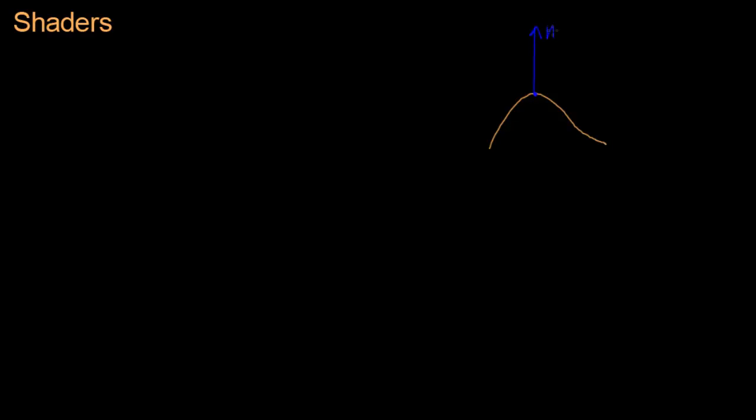So this was the normal vector at that point which we received from the normal map, and we also have the angle to the light, and we call that vector v in the previous video but I'm going to call it l.